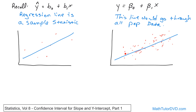If you knew all possible data points — literally a spreadsheet with millions of values — you could calculate these coefficients and write down the regression line that goes through all population data, and you'd have no need for any of this. But we never really know everything, so actually writing down this equation with certainty and knowing these coefficients basically never happens.